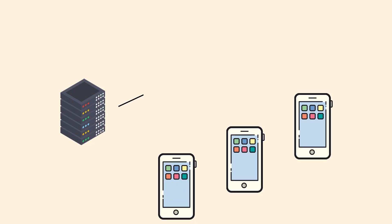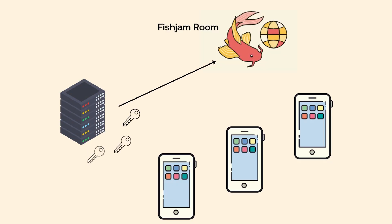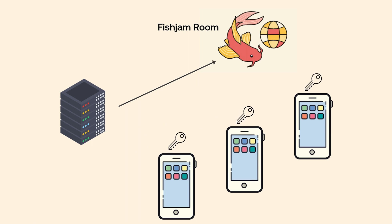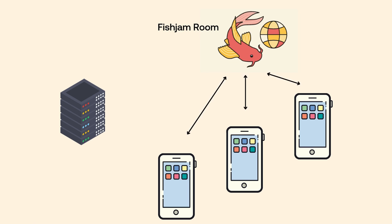So how does it work? It all starts with a room. A room is a space where peers can join and stream multimedia to each other. Our server SDKs let you create rooms and generate tokens for users to join the room. The client SDKs help you set up end users' media devices, then use a peer token to join a room and stream the media.